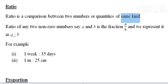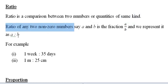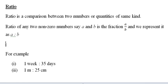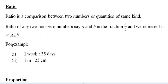They should be of the same nature, same type, or same kind. The ratio of any two non-zero numbers means that in any ratio, like a is to b, or three is to five, the numbers should not be equal to zero. There cannot be a ratio like zero is to one — that is not a ratio. In a ratio, both numbers should be non-zero.